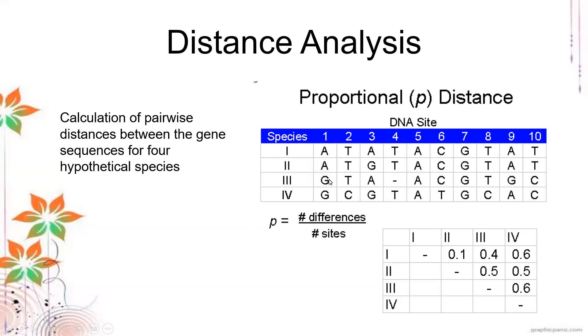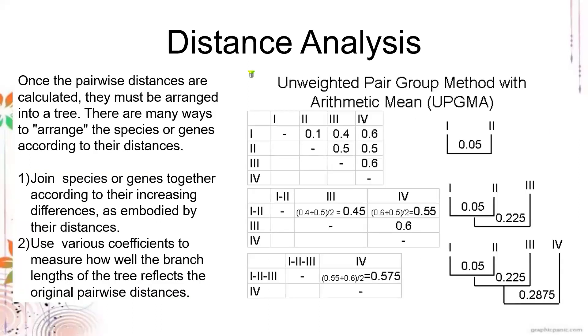In one versus three, you have four positions that are different, divided by a total of 10 positions. Then one versus four, do the same. Then do the same with two versus three, two versus four, and three versus four. In building your tree based on the differences in distance, you first get the one with the lowest score. This is one and two. Then get the next closest score, that is one and three, and then finally one and four.